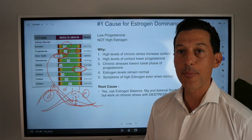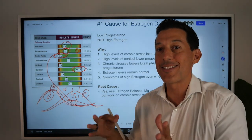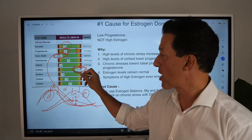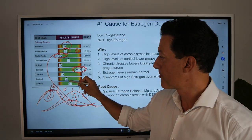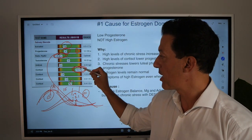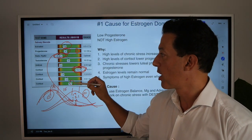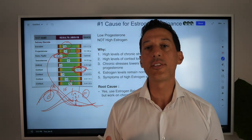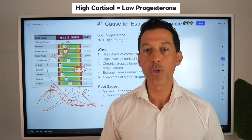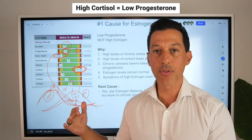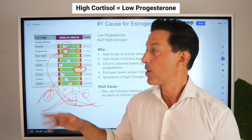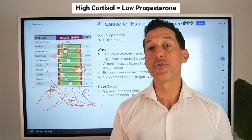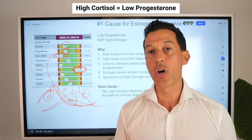This lab shows — and this is a real-world lab — high levels of stress hormone here at night and first thing in the morning are most likely the reason why the body is producing less progesterone, normal estrogen, and you have all those symptoms of estrogen dominance.